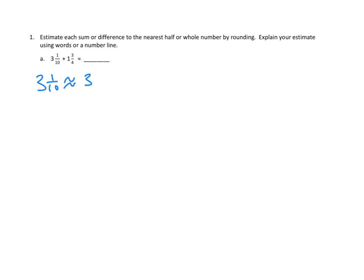And let's take a look at 1 and 3 fourths. 1 and 3 fourths is about, it's pretty close to 2. Because if we think of 1 and 3 fourths and we had 3 fourths of a pizza, it would be most of a pizza. So we're going to say that that's about equal to 2. So I'm just going to add those two numbers together. I'm going to say 3 plus 2 equals 5, roughly. So we've got our estimate. And notice that those squiggly, the squiggly equal sign is your estimation sign. That 3 and 1 tenths plus 1 and 3 fourths is not exactly equal to 5. But we think that it's pretty equal to 5.